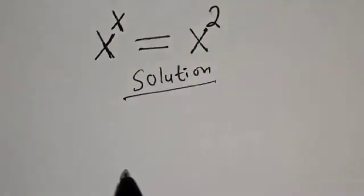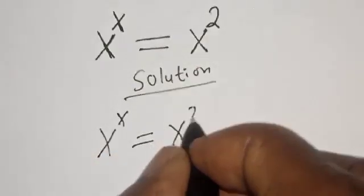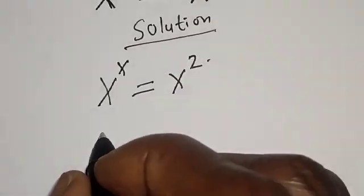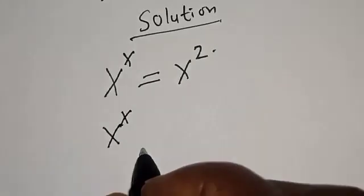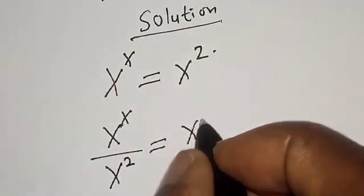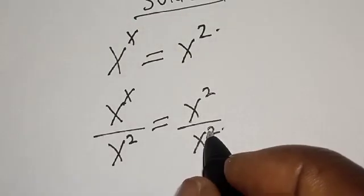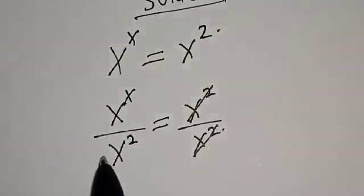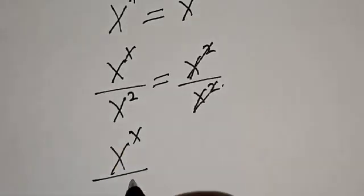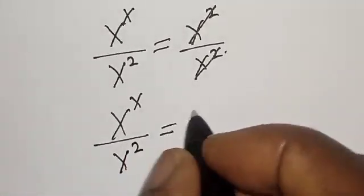We have the given equation: s raised to power s is equal to s squared. Now let's divide both sides by s squared. We have s raised to power s divided by s squared, is equal to s squared divided by s squared. Now this will cancel, and we have the left hand side become s raised to power s divided by s squared, is equal to one.